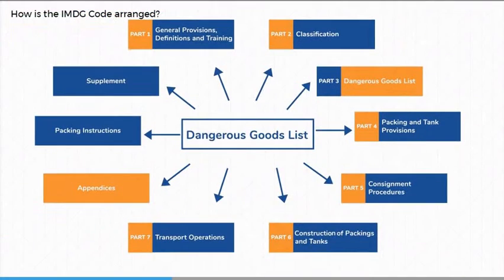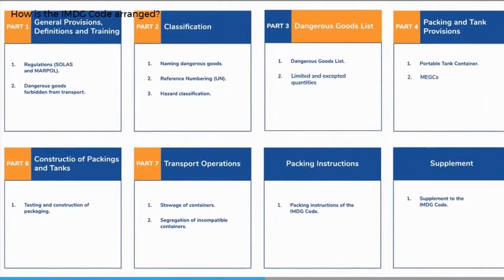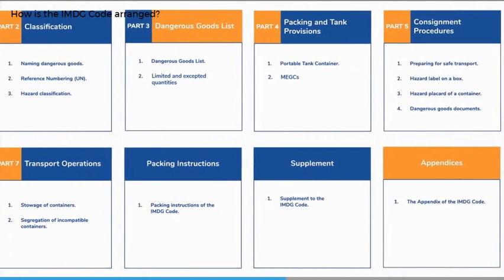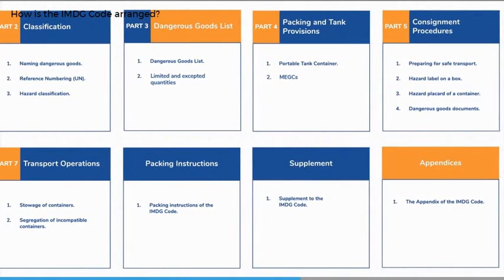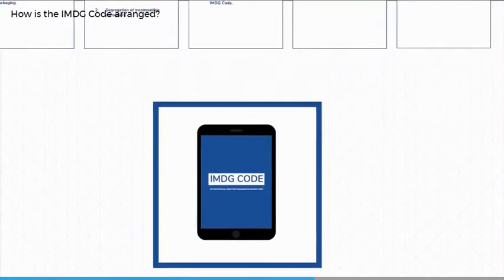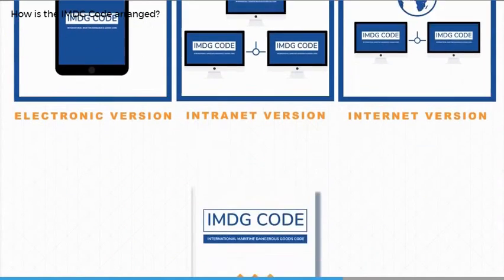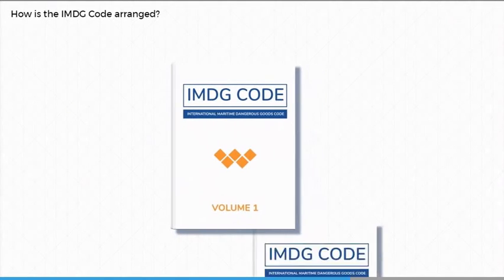The IMDG code is structured so that the user can start at the dangerous goods list, which contains information and codes that take the user to various provisions and instructions. The IMDG code consists of seven parts, appendices and a supplement. Although available in electronic, internet and intranet versions, the traditional book form is in two volumes and the supplement.